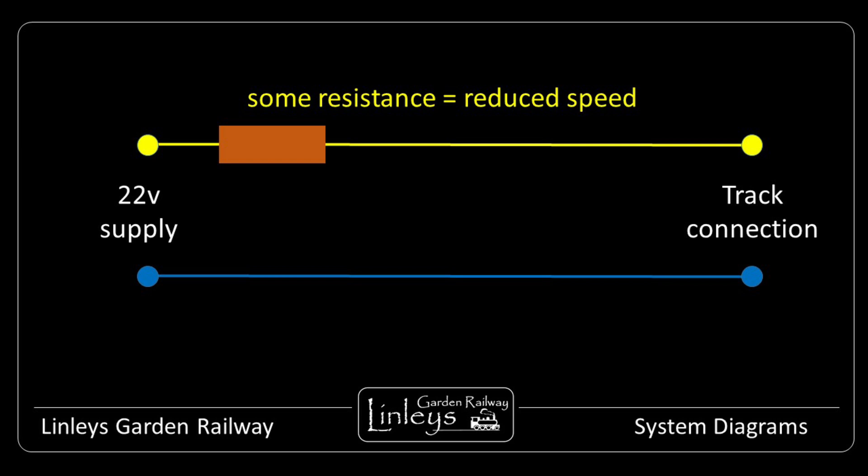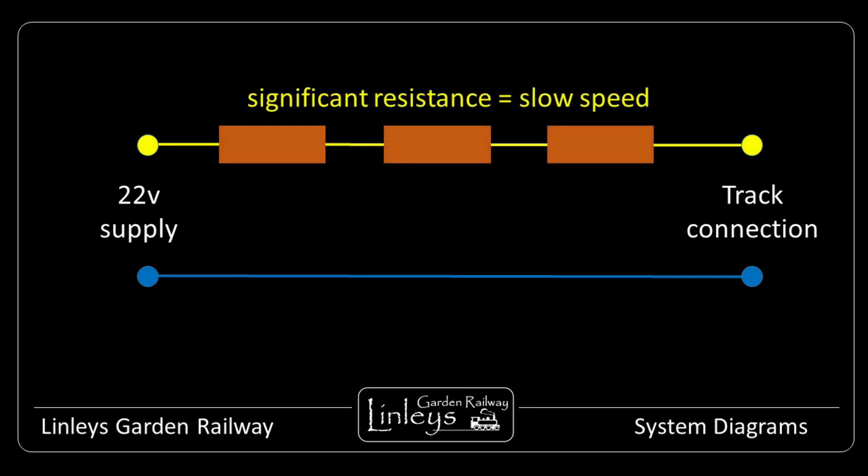By adding in some resistance to the track feed, the voltage available at the track is reduced, and so the train will travel more slowly.